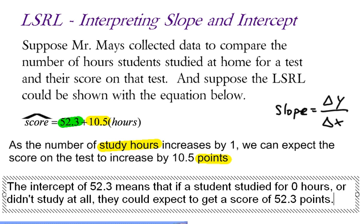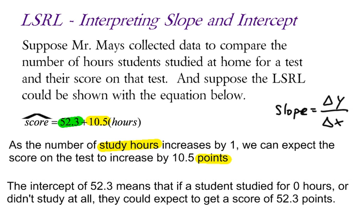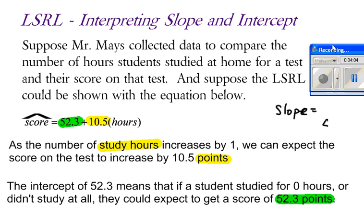And once again, I've got the units in there, 52.3 points. It's important that all of that is included. You need to put as much context in there as possible. And that's how you can interpret the slope and the y-intercept.